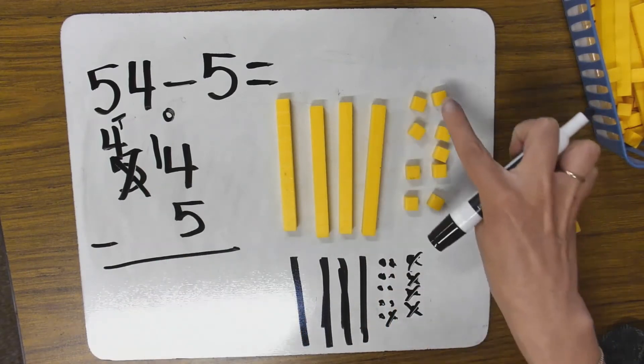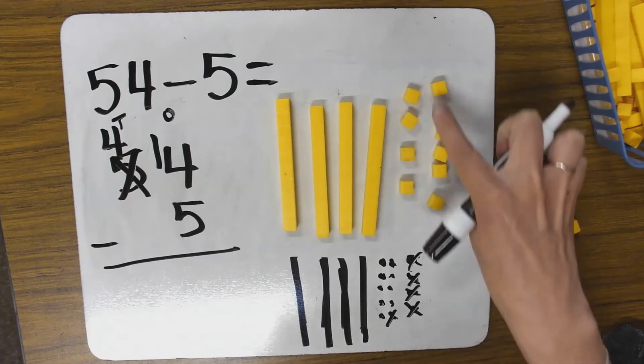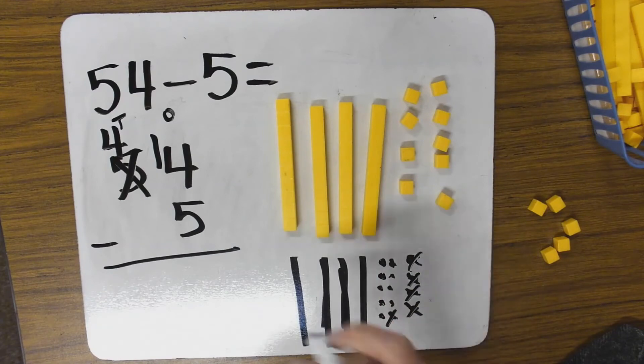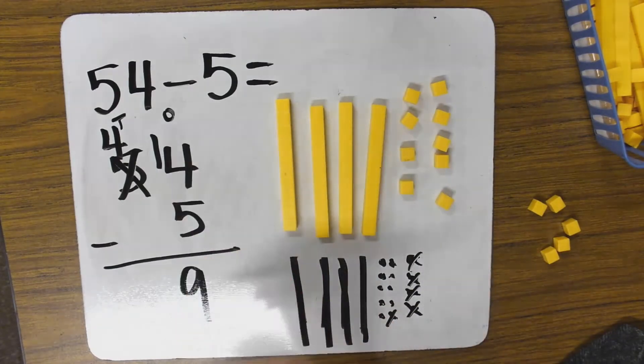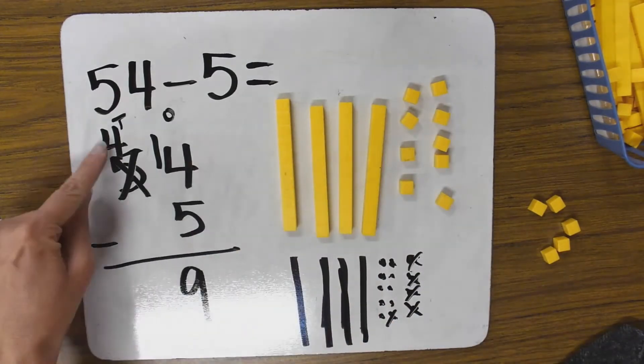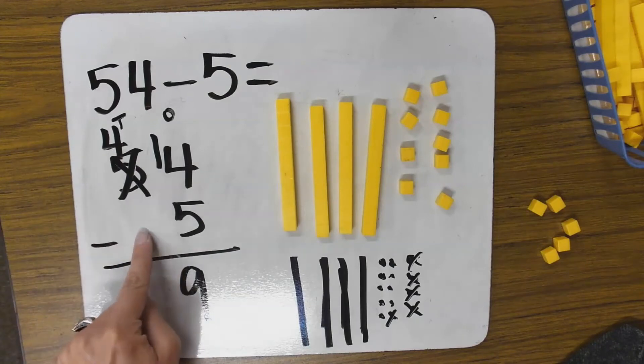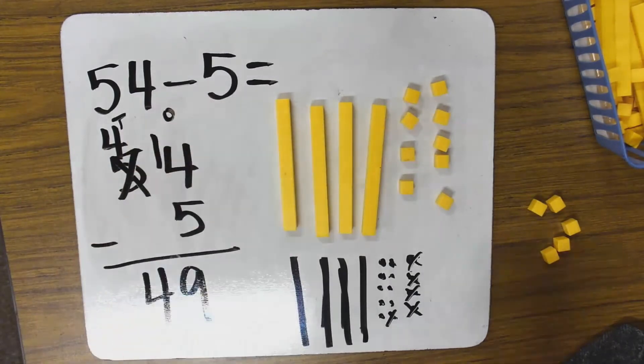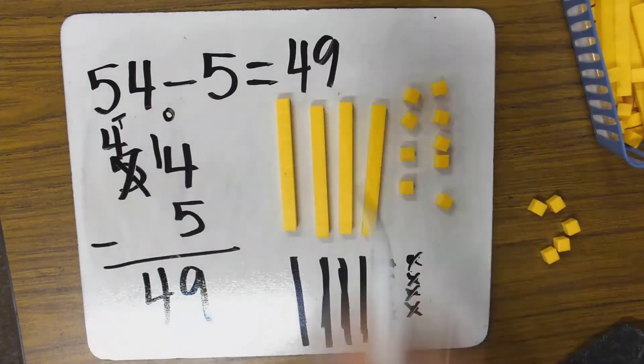Now, how many ones are left? 14 minus 5 is 9. Now I have four 10s. I'm not taking any away. I still have four 10s. So 54 minus 5 equals 49.